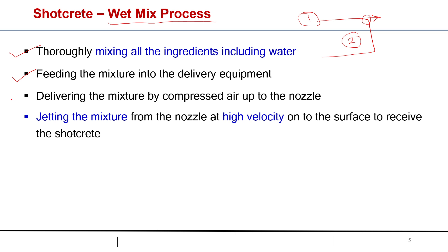Delivering the mixture by compressed air up to the nozzle and then jetting the mixture from the nozzle at high velocity on the surface to receive the shotcrete. The important point is high velocity. We apply the material with high velocity.